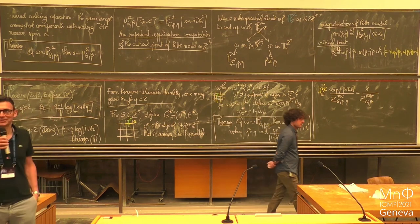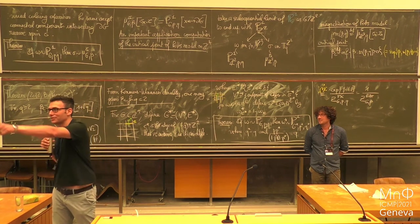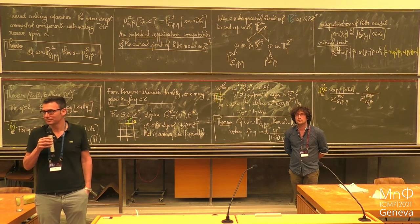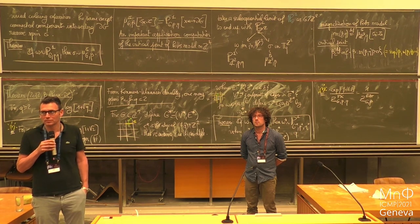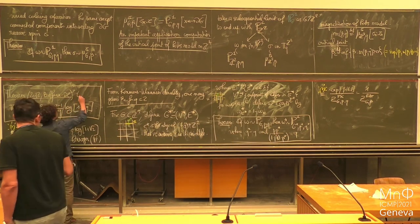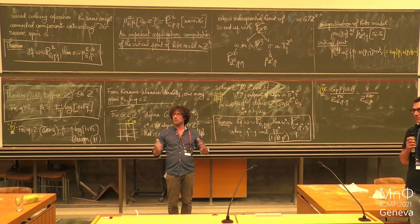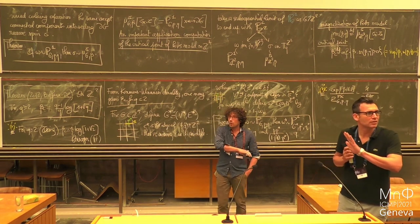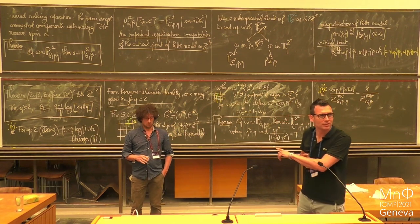Thank you very much for a very nice talk. Are there questions? Just to be sure: all of what you said is valid for a generic graph, except the theorem on the critical point which assumes the square lattice? Yes, that's the square lattice. In this class I always look at subgraphs of the square lattice and take the limit. But everything else — the Edwards-Sokal coupling — is valid for generic graphs, and you don't even need nearest neighbor models.